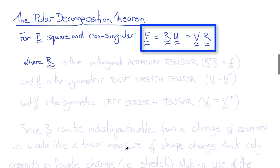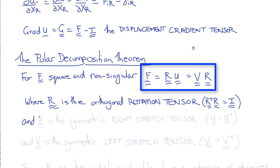So here, R is the orthogonal rotation tensor. It has the property that R transpose R equals I, or R R transpose equal I. And U is the symmetric right stretch tensor. So U is equal to U transpose.